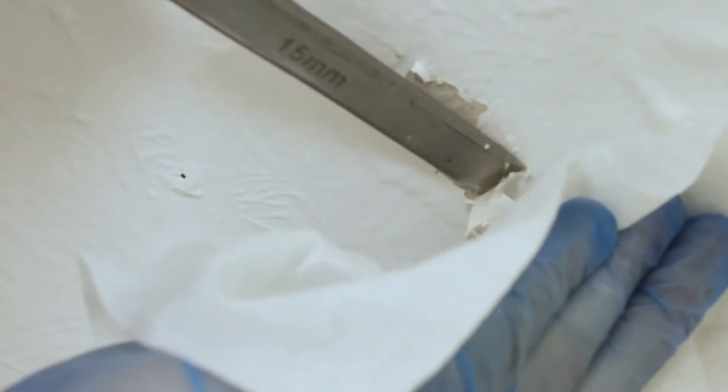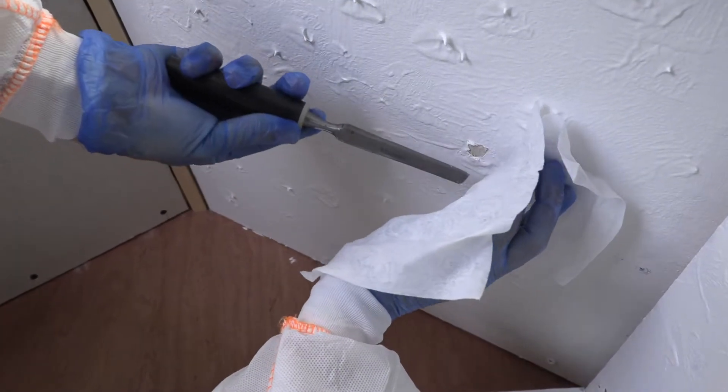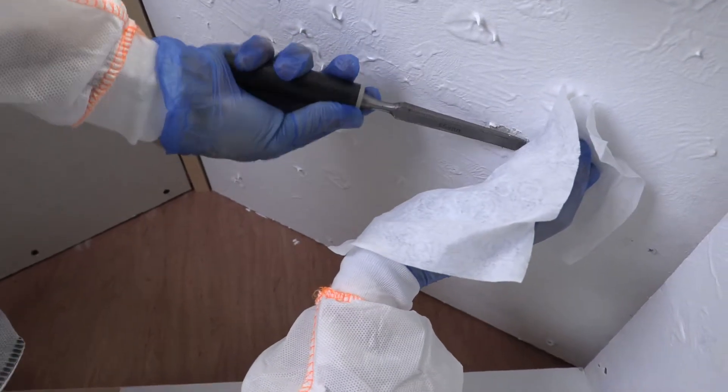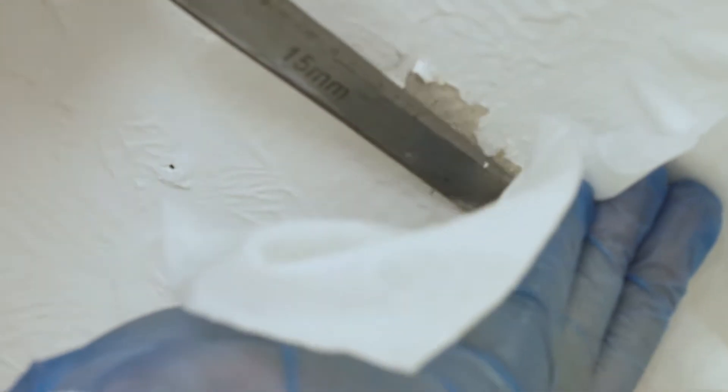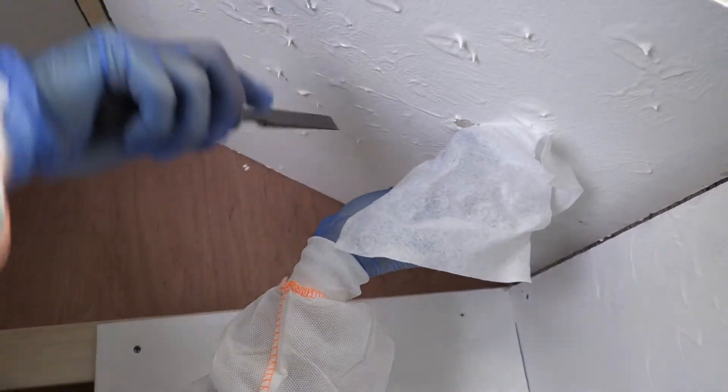You should take the sample from at least three different locations across the ceiling or wall area. Asbestos may not be evenly distributed across the textured coating surface, so this method ensures you get a good representative sample.